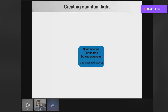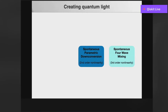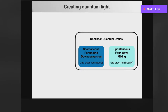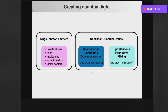Quantum light is also being used for foundational physics. The famous Bell experiments from a few years ago were done using quantum light, and it's a great medium for studying analog systems. In this talk, I'm going to focus on a particular method for generating quantum light called spontaneous parametric down conversion, which relies on a second-order optical nonlinearity. There's also a related method called spontaneous four-wave mixing, which relies on a third-order nonlinearity. Both of these fall under the umbrella of nonlinear quantum optics.